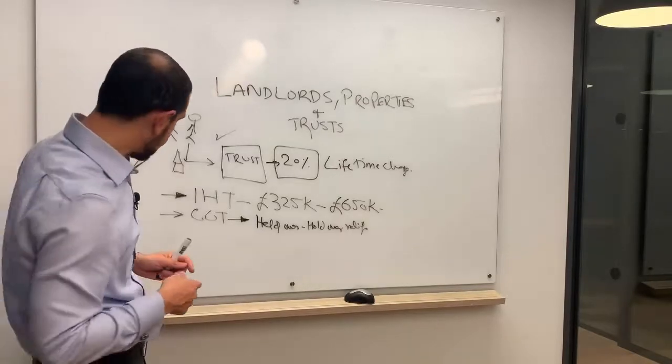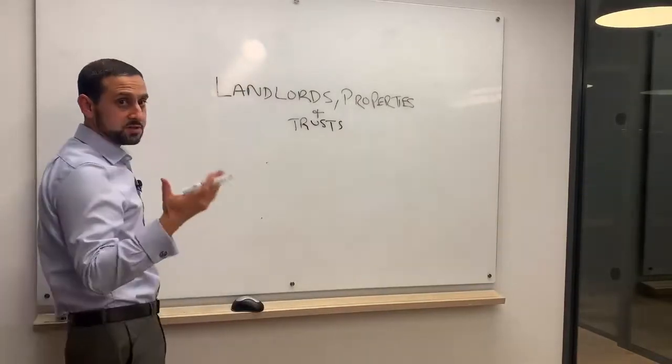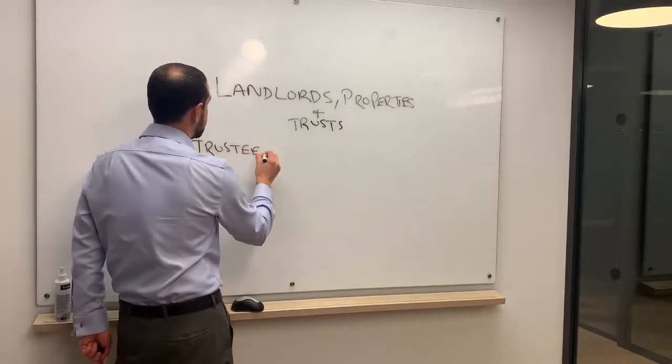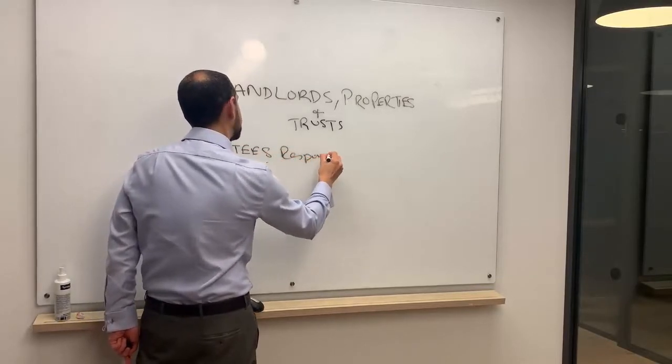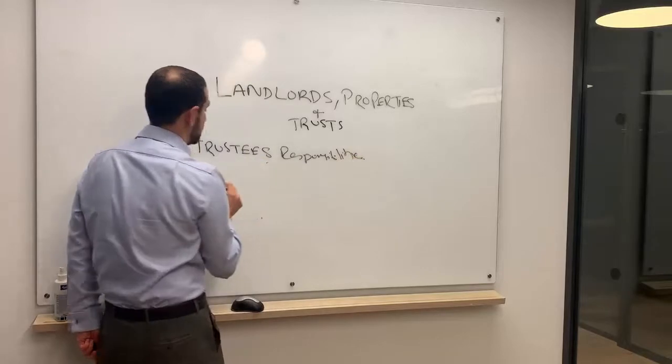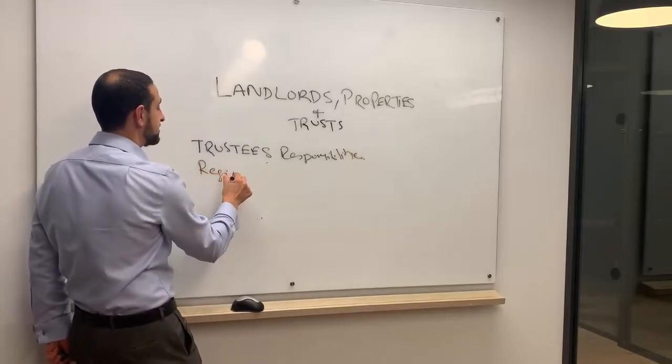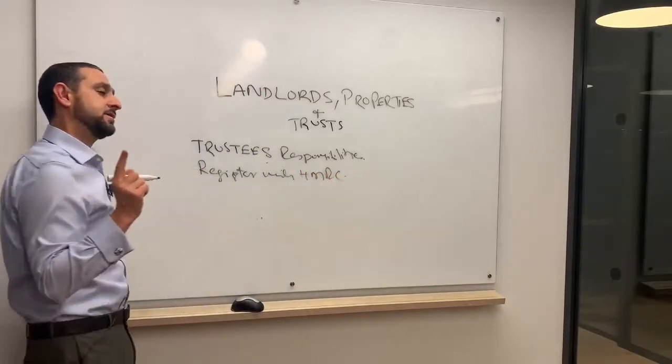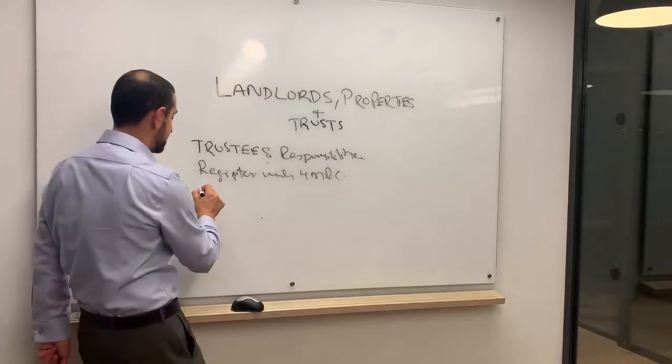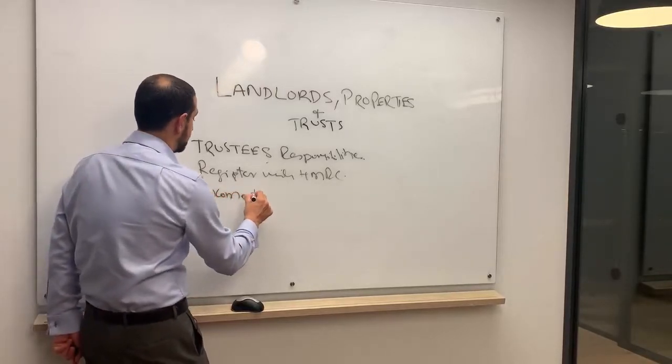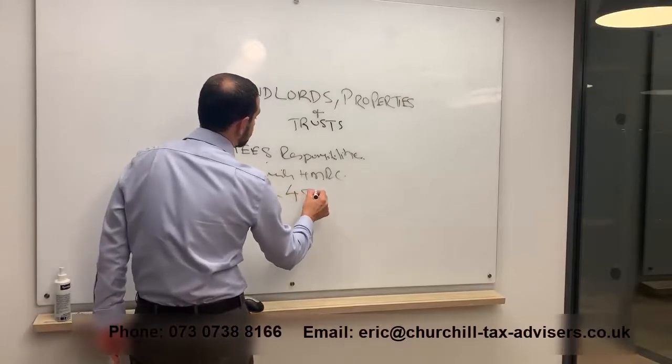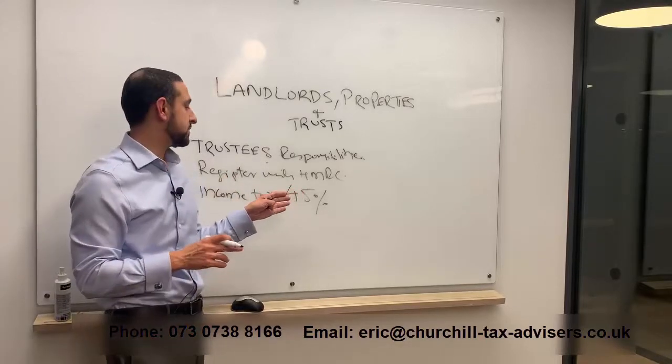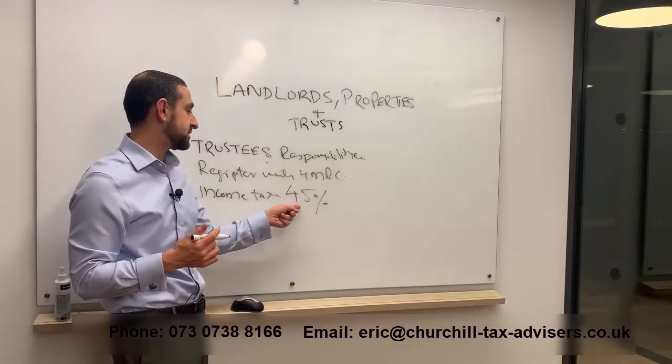The next point to consider is the income tax once the trust is set up. The trustee's responsibilities start. Register with HMRC. For income tax purposes, trusts pay tax at 45%. This is the highest rate of tax, and this is why trusts can be very prohibitive.